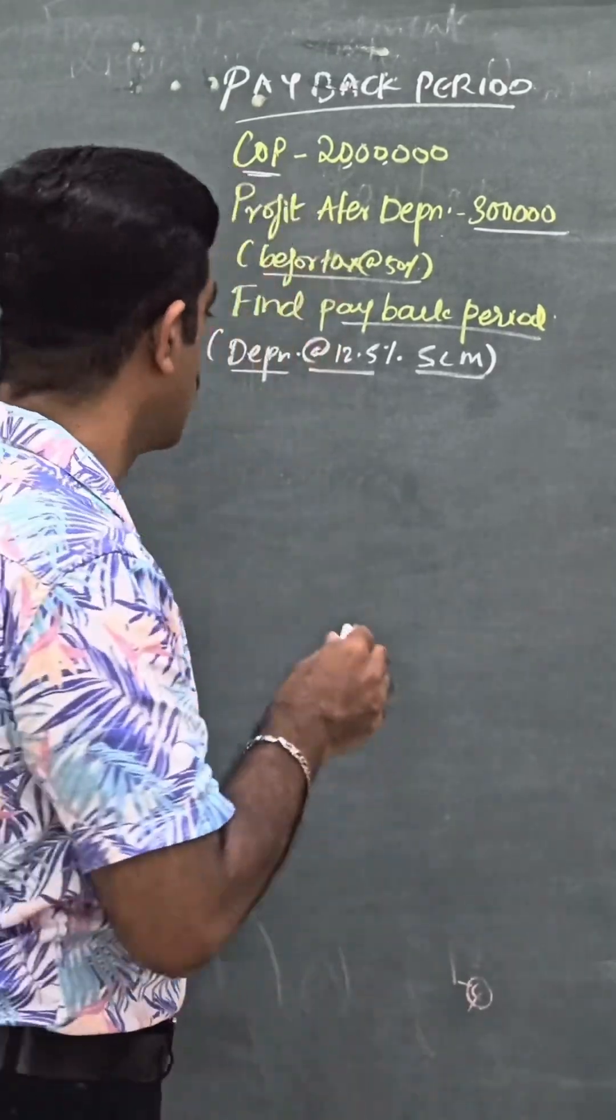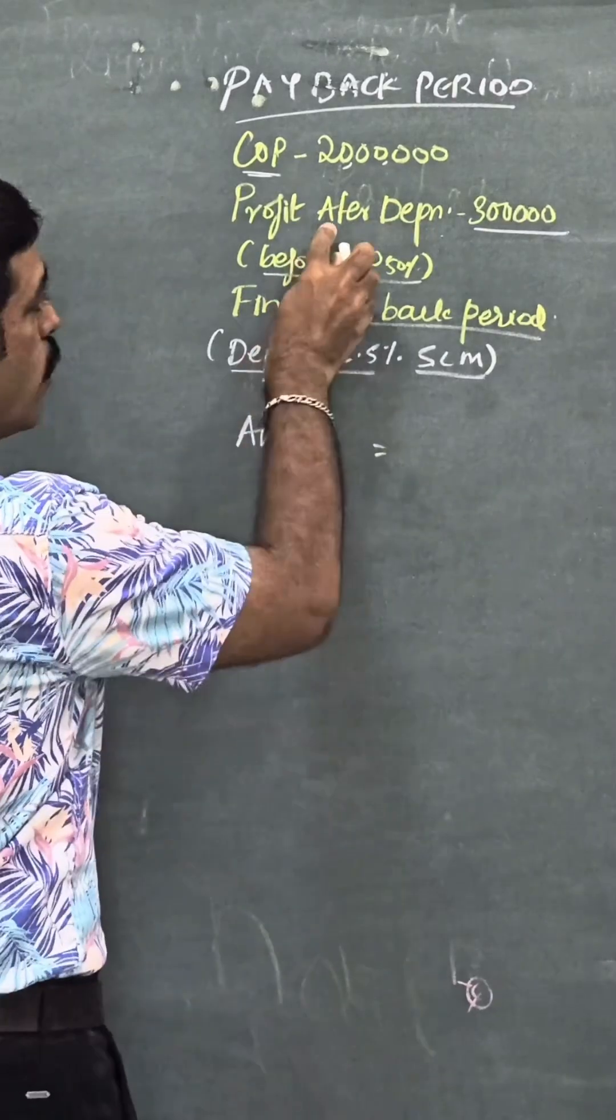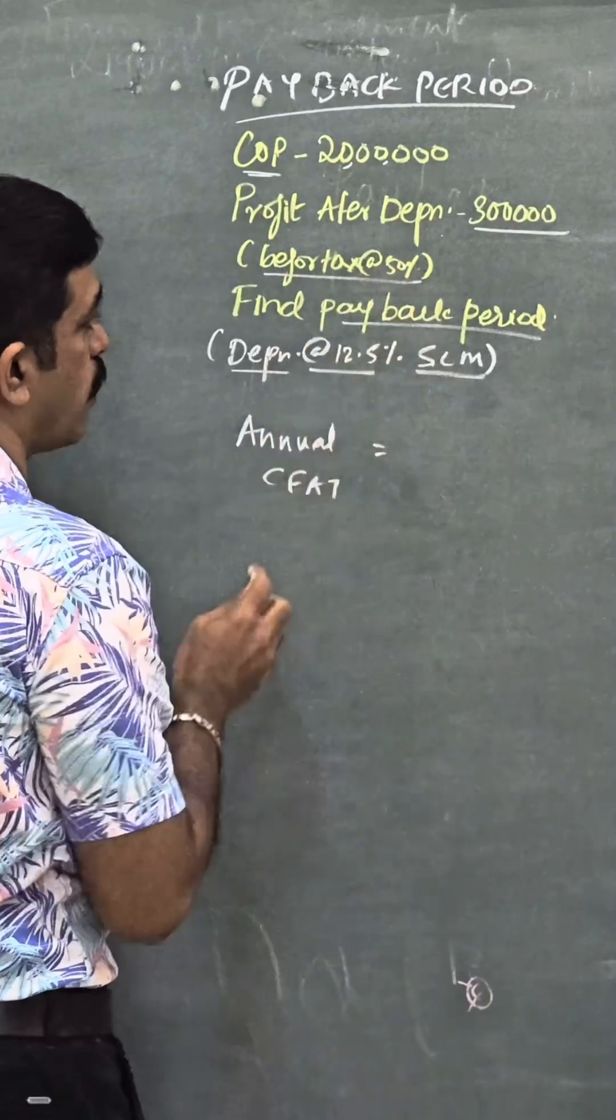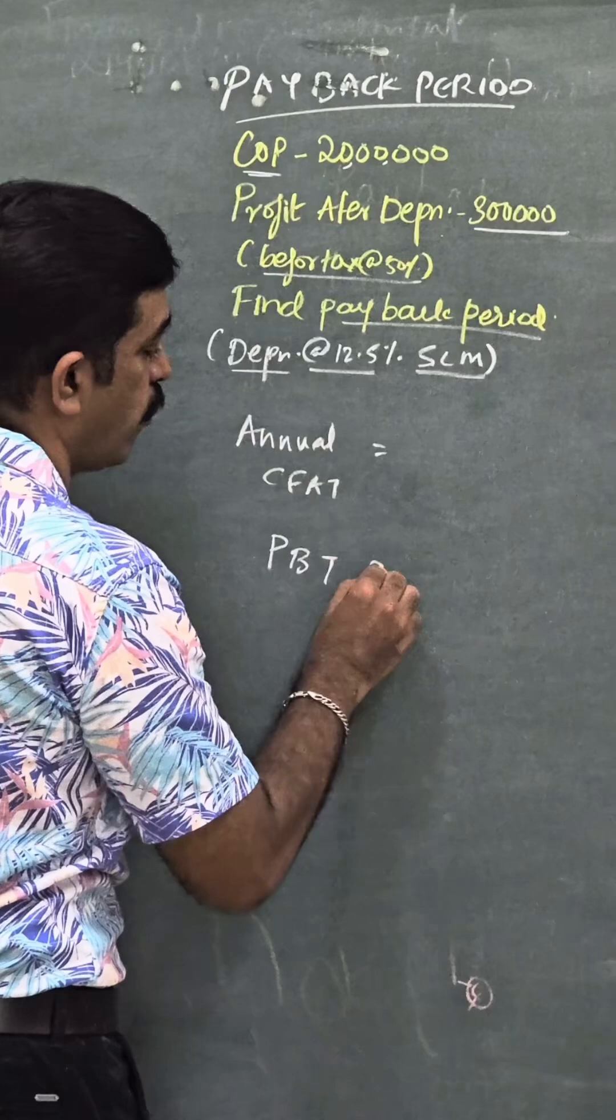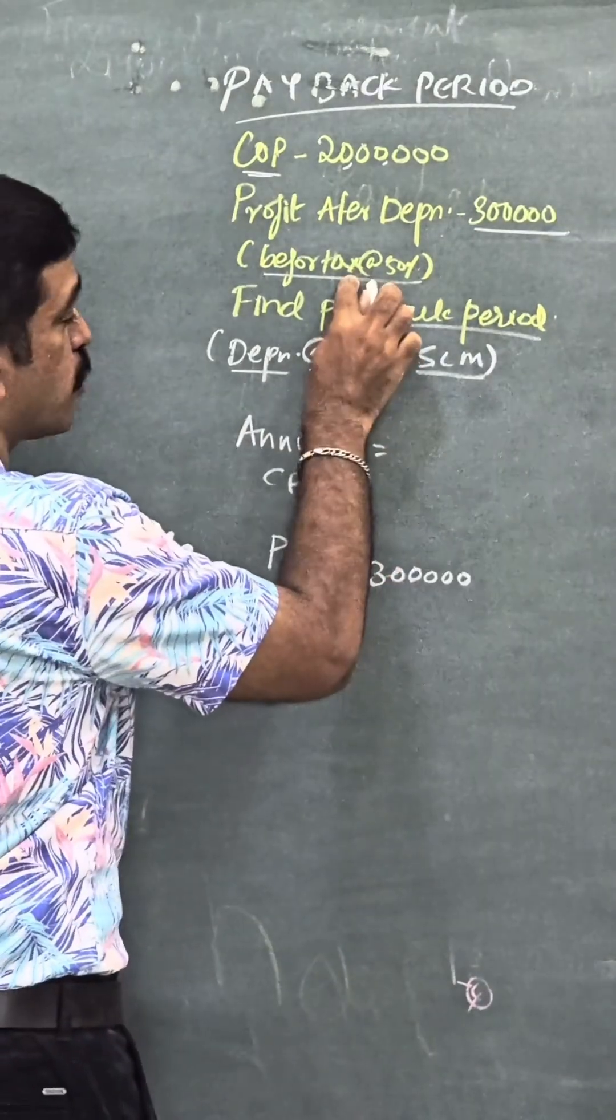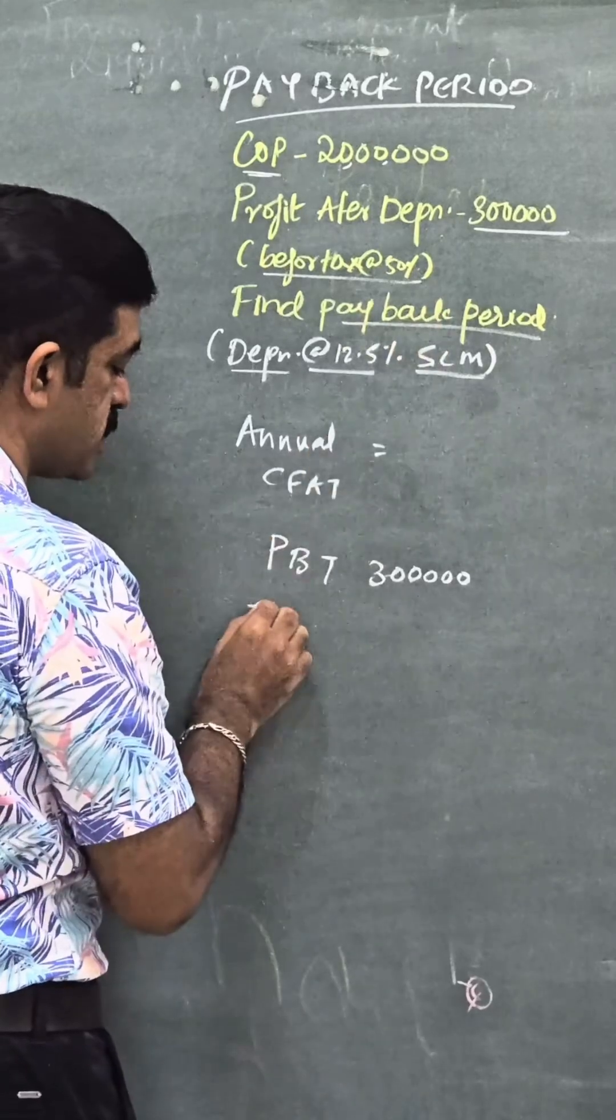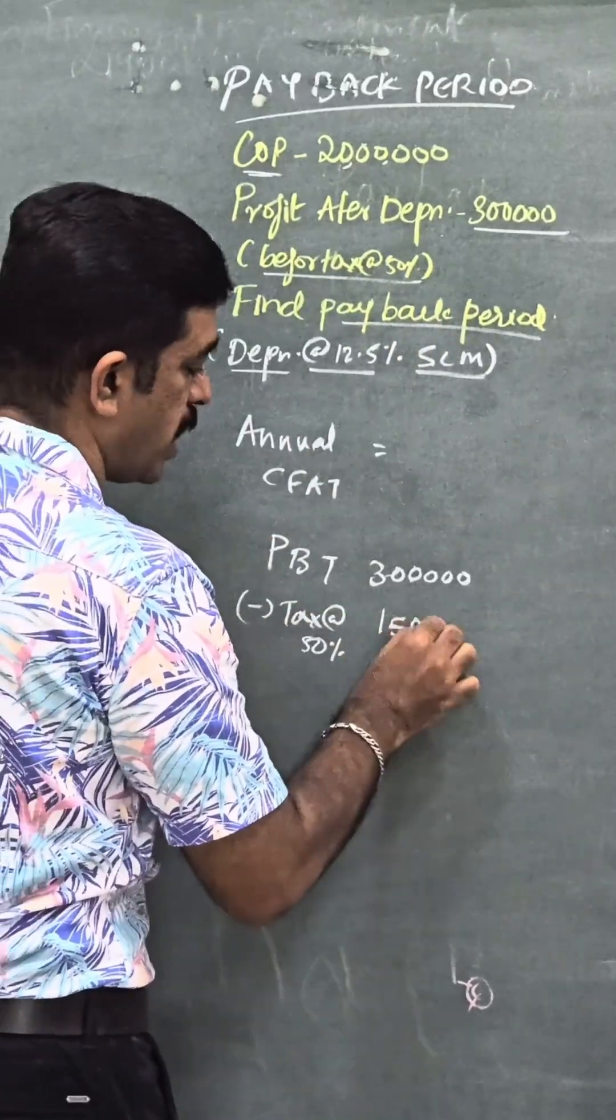Let's find out what is annual cash flow after tax. You have this profit after depreciation information which is before tax of 50 percent, so this is PBT of 3 lakh. And this profit is after the depreciation but tax not yet paid. So let us deduct tax: tax at 50 percent which is 1 lakh 50,000.